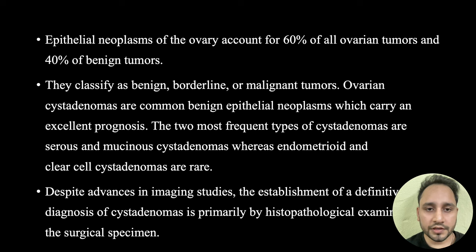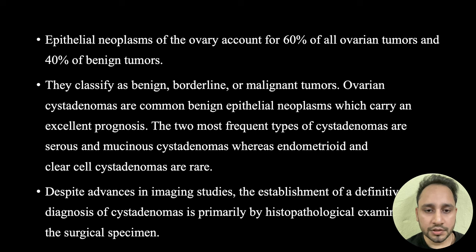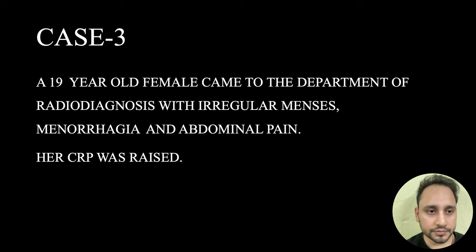Epithelial neoplasms of the ovary account for 60% of all ovarian tumors and 40% of benign tumors. They are classified as benign, borderline, or malignant tumors. Ovarian cystadenomas are common benign epithelial neoplasms which carry an excellent prognosis. The two most frequent types are serous and mucinous cystadenomas, whereas endometrioid and clear-cell cystadenomas are rare. Despite advances in imaging, the establishment of a definitive diagnosis of cystadenomas is primarily by histopathological examination of the surgical specimen.